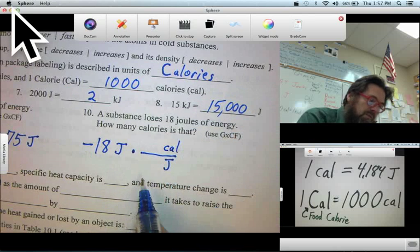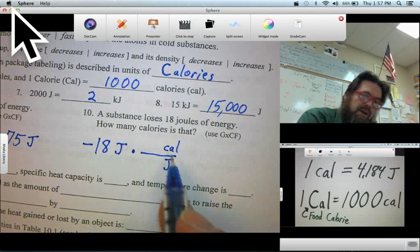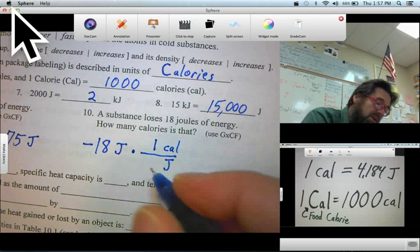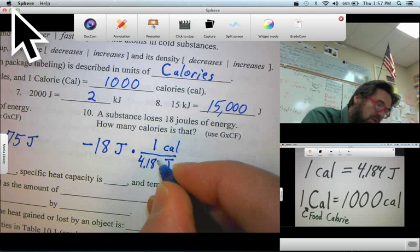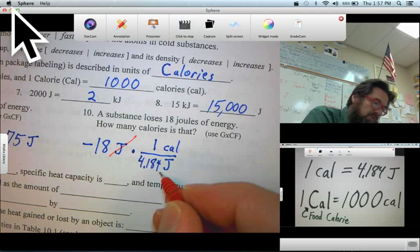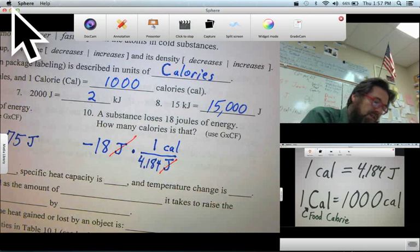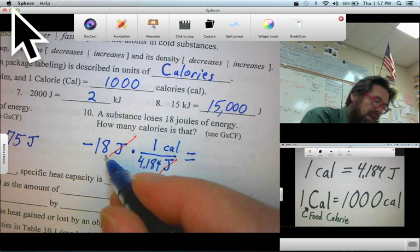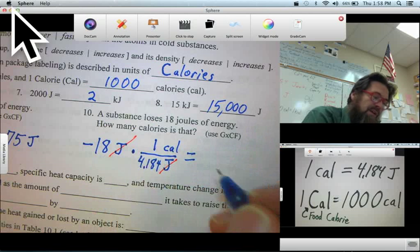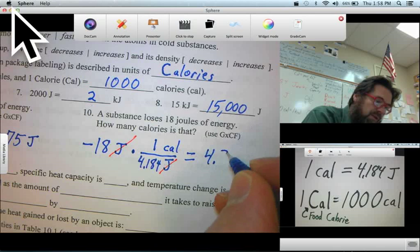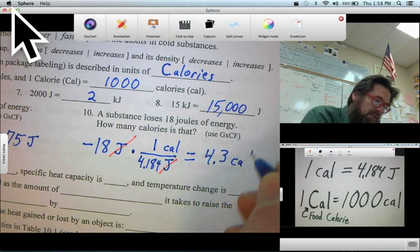And then we fill in the numbers that make this a valid conversion factor. The top and the bottom have to be equal. One calorie equals 4.184 Joules. Joules on top, Joules on bottom, cancel. Equals, do the math. We take 18 divided by 4.184, and we get 4.3 calories. And there we have it.